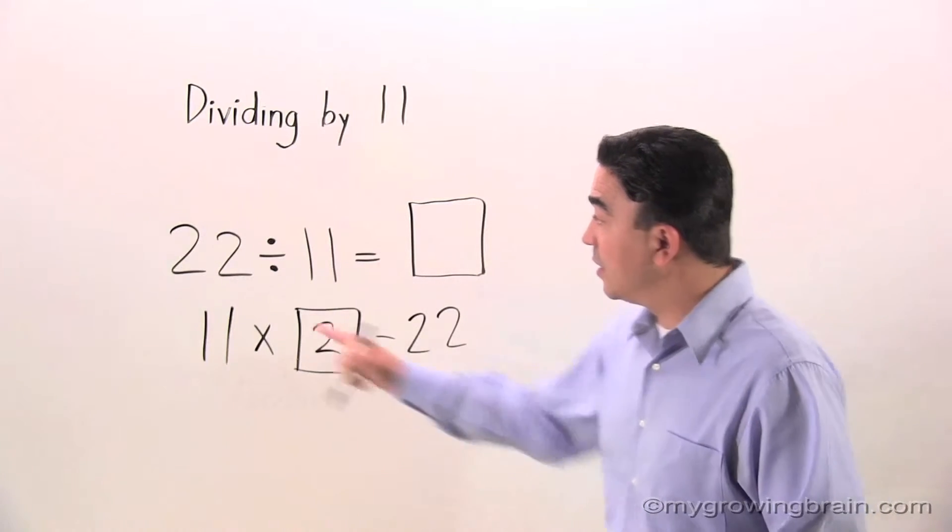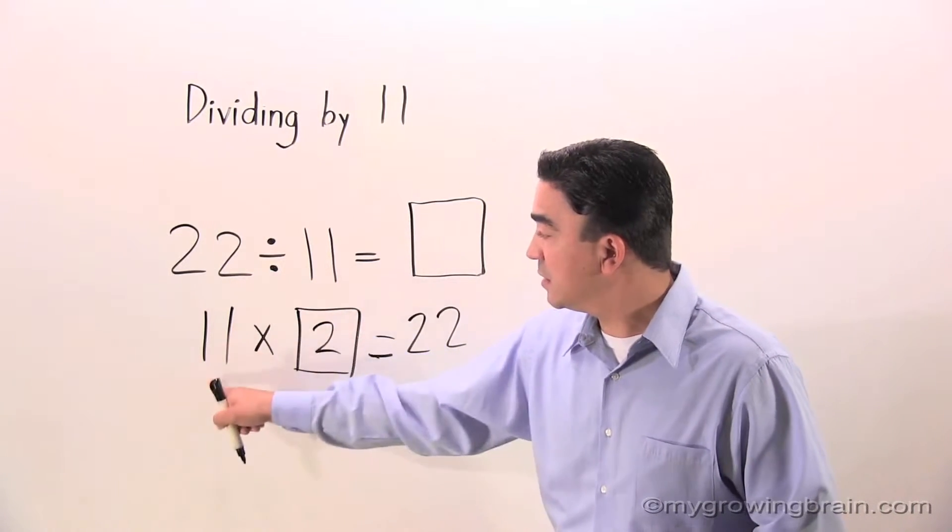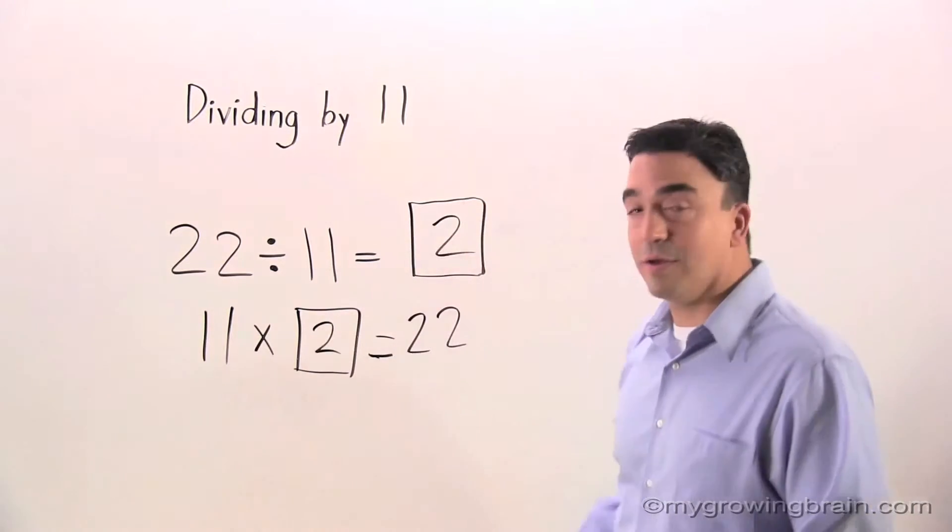Now, if we know that, 22 divided by 11 equals 2.